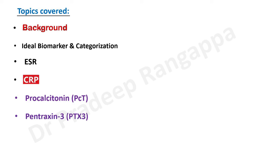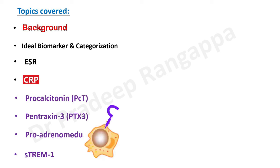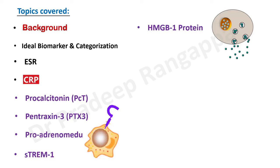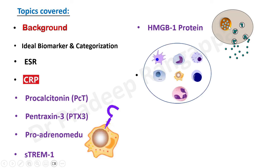Then there are newer ones: Pentraxin 3, which is similar to CRP; ProADM (proadrenomedullin); STREM-1, the soluble triggering receptor expressed on myeloid cells; and HMGB1, the high mobility group box 1 protein, which comes out from lysosomes and the nucleus. We'll also give a brief overview of immune biomarkers — the whole cosmos of inflammatory cells — and touch on omics: proteomics, metabolomics, and genomics.